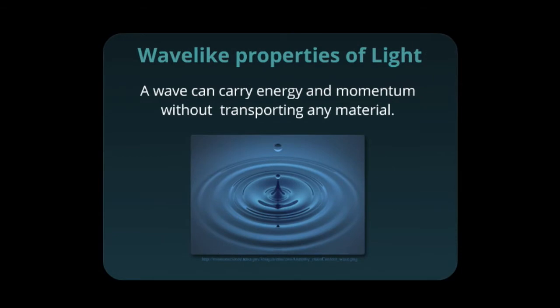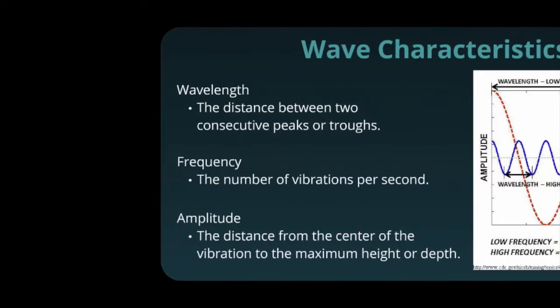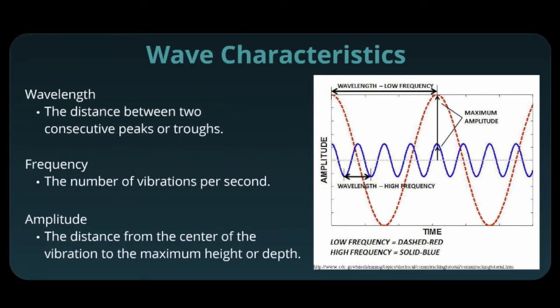What are some of the wave-like properties of light? Waves can carry momentum. If you've ever gone to the ocean and stood in front of an incoming wave, you know that waves can carry momentum because it will push you back. Waves don't necessarily have to transport any material. If you drop a pebble in a pond, you can see the ripples moving across the pond, but the water just oscillates up and down—it does not move with the ripples. Waves have different properties that we use when we discuss them. The distance between two peaks or two troughs is called the wavelength. How many times something vibrates per second is the frequency. The height of the vibration is the amplitude.